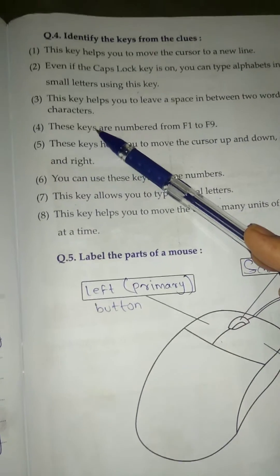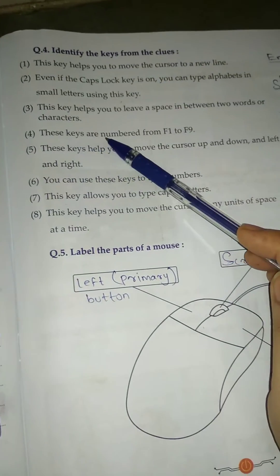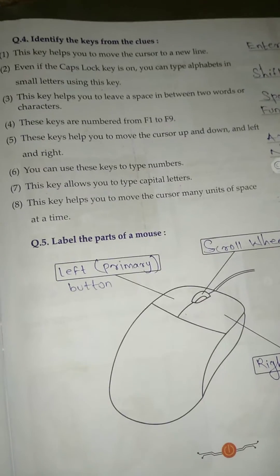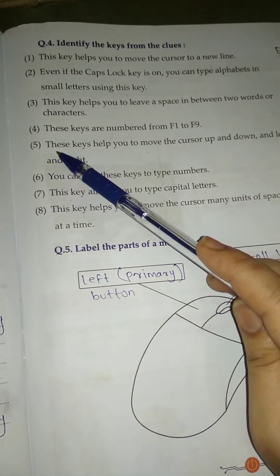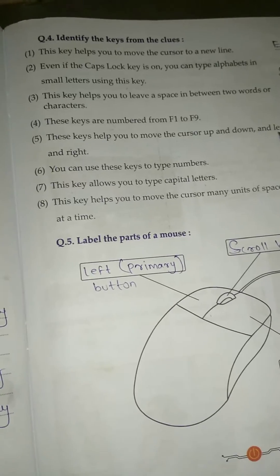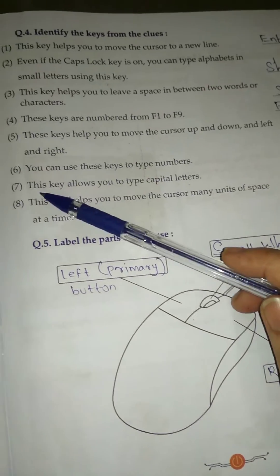Number 4, these keys are numbered from F1 to F9 - Function Key. Number 5, these keys help you to move the cursor up and down and left and right - Arrow Key.